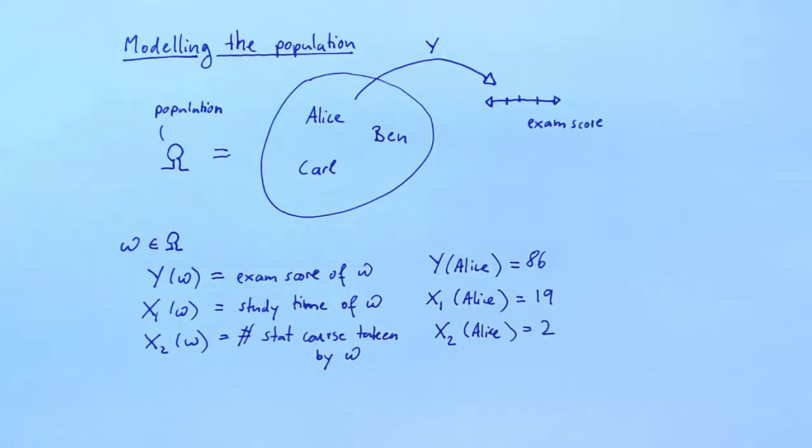Let's continue carrying over concepts from probability theory to describe our population. It turns out that it is very useful to have an analog of the probability function P. For small omega in the population, let P of omega denote the proportion of the population that is made up of omega. In our example, Alice represents one-third of the population. Therefore, P of Alice is one-third.